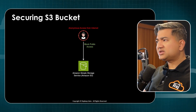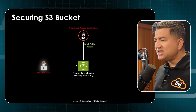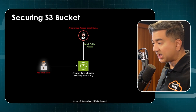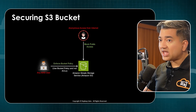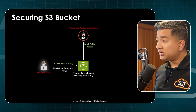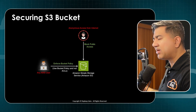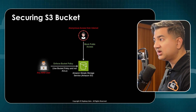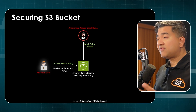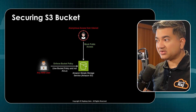You've blocked anonymous access, but at this point any authenticated AWS user can still access your bucket. How do you stop that? You enforce a bucket policy, so in production not just any user can go to your bucket and read sensitive information — that information can only be read from AWS services running your application.